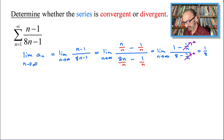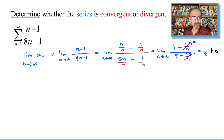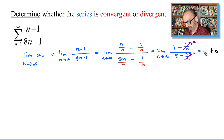This is clearly not equal to 0. Therefore, the series is divergent — it diverges.